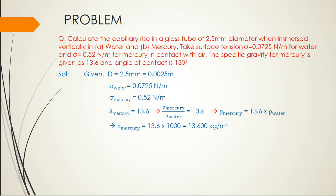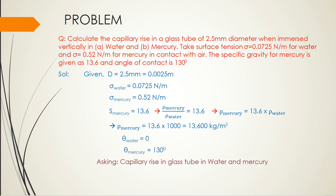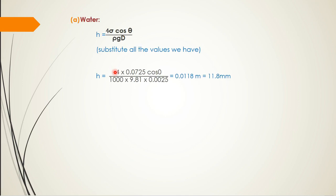For water: the angle of contact is 0°. Using the formula h = 4σ cosθ / (ρgd), substitute: sigma = 0.0725, cos 0° = 1, rho = 1000 kg/m³, g = 9.81 m/s², d = 0.0025 m. Calculating this gives h = 11.8 mm or 0.0118 m for water.